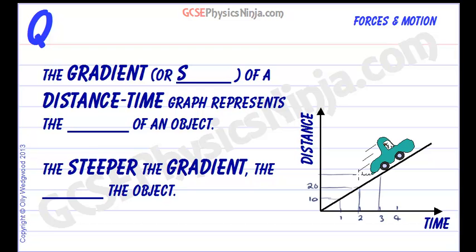Each second we can see that the distance increases by the same amount. We're going at a constant speed. That's what a straight line means on a distance-time graph.